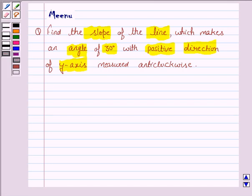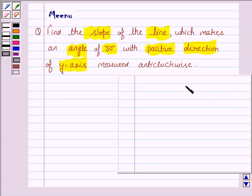To solve this question, we need to know that if theta is the angle made by a line with positive direction of x-axis measured anticlockwise, then tan theta is the slope of the line.